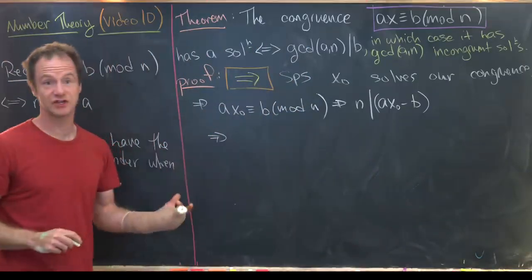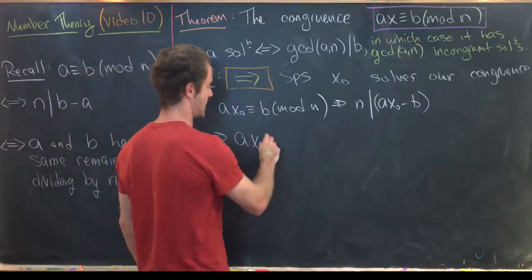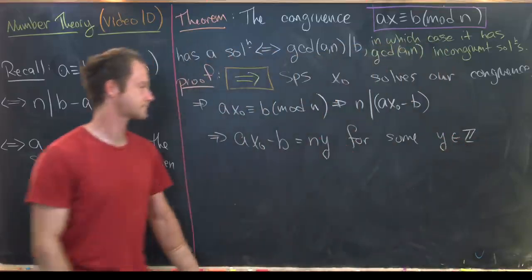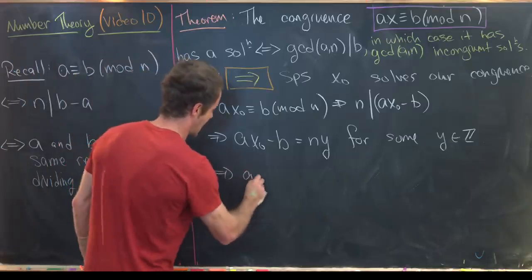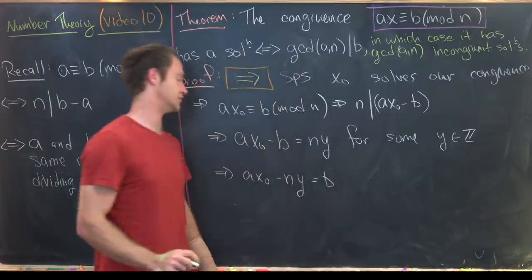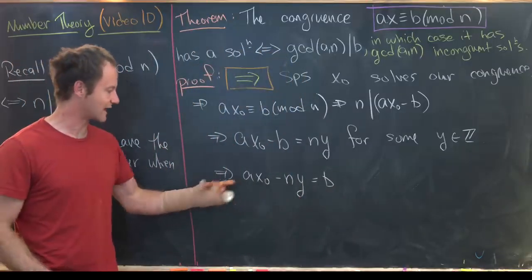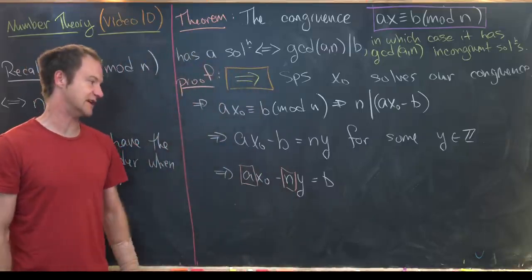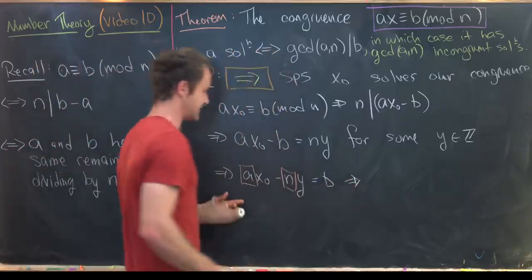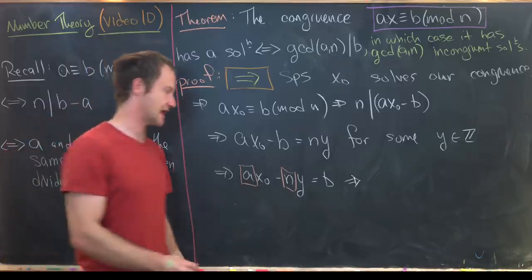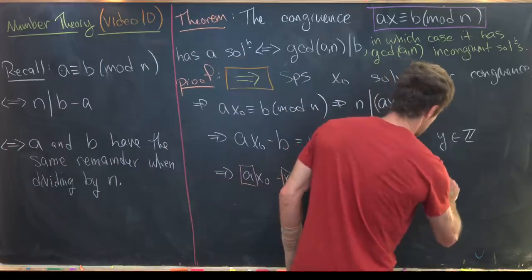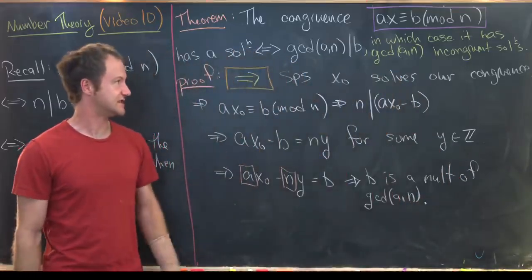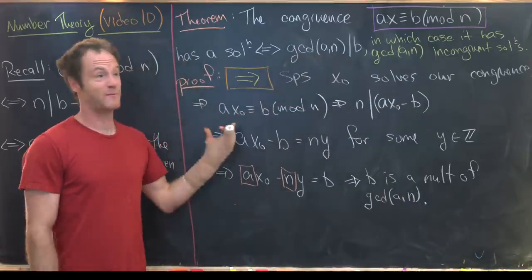Moving to the definition of divisibility, ax₀ minus b equals n times y for some integer y. Rearranging gives ax₀ minus ny equals b. Linear combinations of a and n are always multiples of gcd(a, n) — that's something we proved earlier. So b being expressible as a linear combination of a and n means gcd(a, n) divides b, finishing this direction.